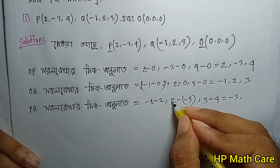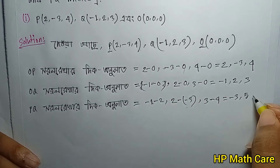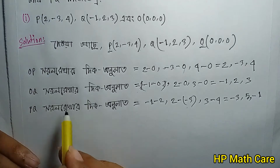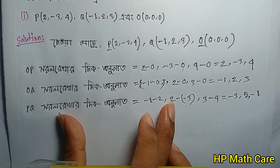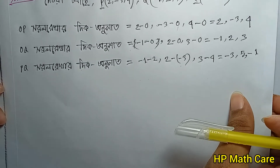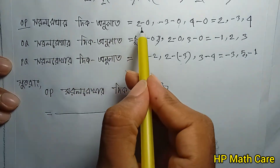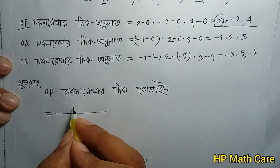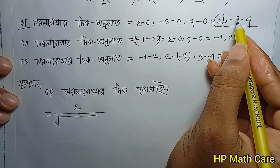2 minus 2 plus 5, 3 minus 4 gives minus 1. Now I will show: magnitude of OP is square root of 2 squared plus minus 3 squared plus 4 squared. That equals square root of 4 plus 9 plus 16.